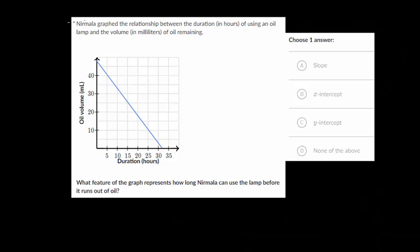So I might pronounce this wrong, but we'll go with Nirmala. Graph the relationship between the duration in hours of using an oil lamp and the volume in milliliters of oil remaining. So as time passes, as the hours increase, the amount of oil remaining for this lamp decreases in a linear fashion.